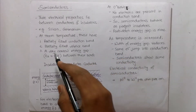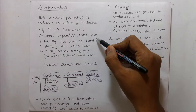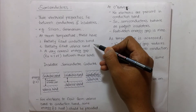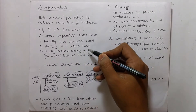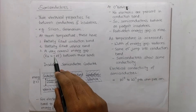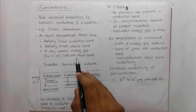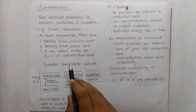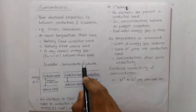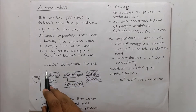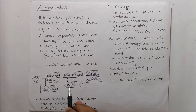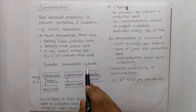At room temperature, semiconductors have a partially filled conduction band, partially filled valence band, and a very narrow energy gap — approximately one electron volt between these bands. Here we will see the energy with respect to different bands for different materials.